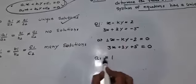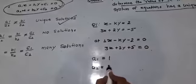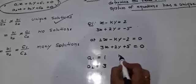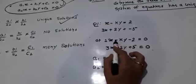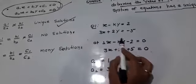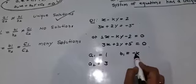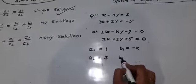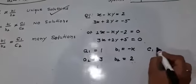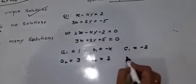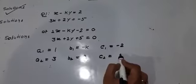Then, a1 equal 1, a2 equal 3, b1 equal minus k, y has minus k, and b2 equal plus 2, c1 equal minus 2, c2 equal plus 5.